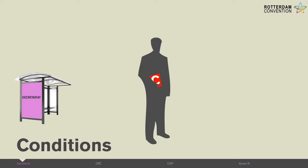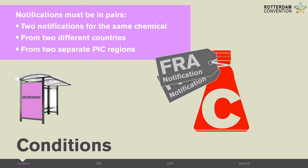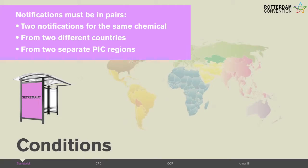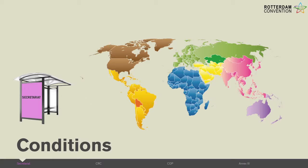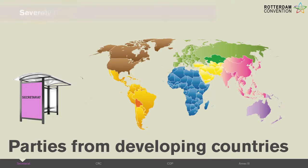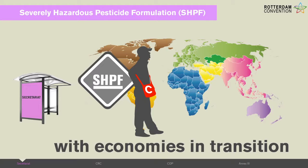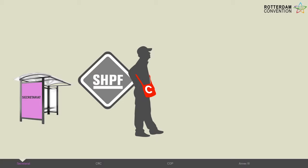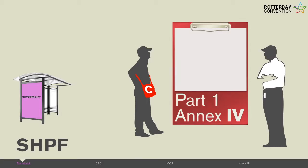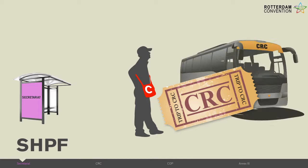But there are conditions. Notifications on the bus must be in pairs — there must be two notifications for the same chemical, coming from two different countries and from two separate PIC regions of the globe. Additionally, parties from developing countries or countries with economies in transition may submit to the Secretariat a proposal for a severely hazardous pesticide formulation that produces severe health or environmental effects under local conditions of use. The Secretariat verifies whether the proposal contains the information outlined in Part 1 of Annex 4 of the Convention, and only qualifying proposals receive a CRC bus ticket.